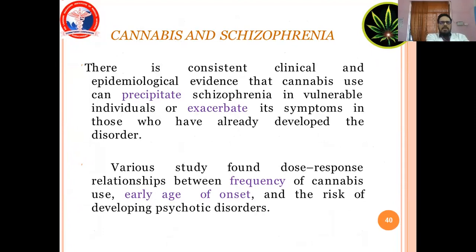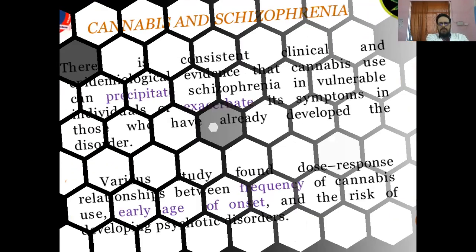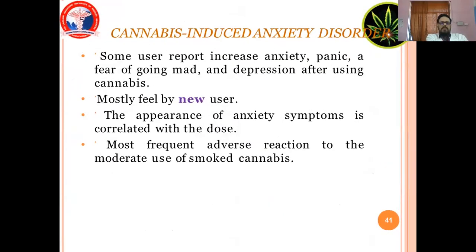There is consistent clinical evidence that cannabis use can precipitate psychosis in vulnerable individuals, or exacerbate its symptoms in those who have already developed a disorder. Various studies show dose-response relationships between frequency of cannabis use, early age of onset, and the risk of developing psychotic disorders. Cannabis-induced anxiety disorder: some users report increased anxiety, panic, a fear of going mad, and depression after using cannabis, mostly in new users. The appearance of anxiety symptoms is correlated with the dose.